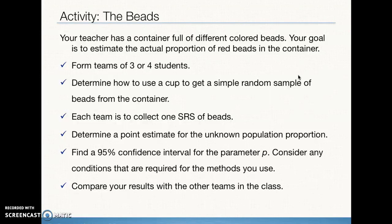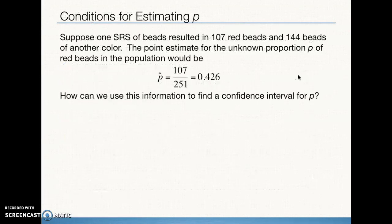We want to find a 95% confidence interval — a range of plausible values for our population proportion. We make sure to check conditions, then compare results with other teams. Our textbook example has a simple random sample with 107 red beads and 144 not-red beads.